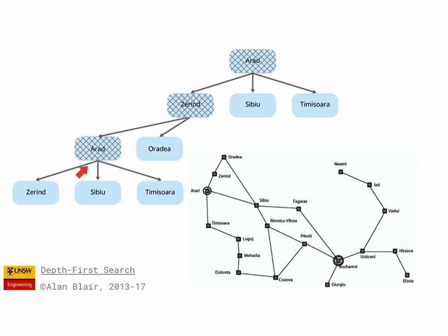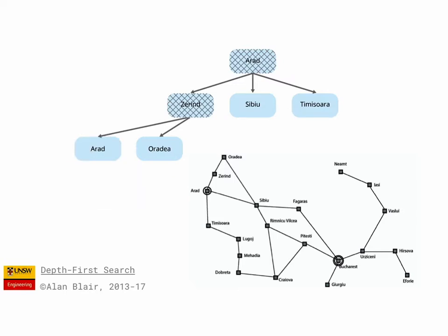So when we get to here, we should notice that Arad has already occurred along this path, so we don't expand that, and instead we expand Oradea.